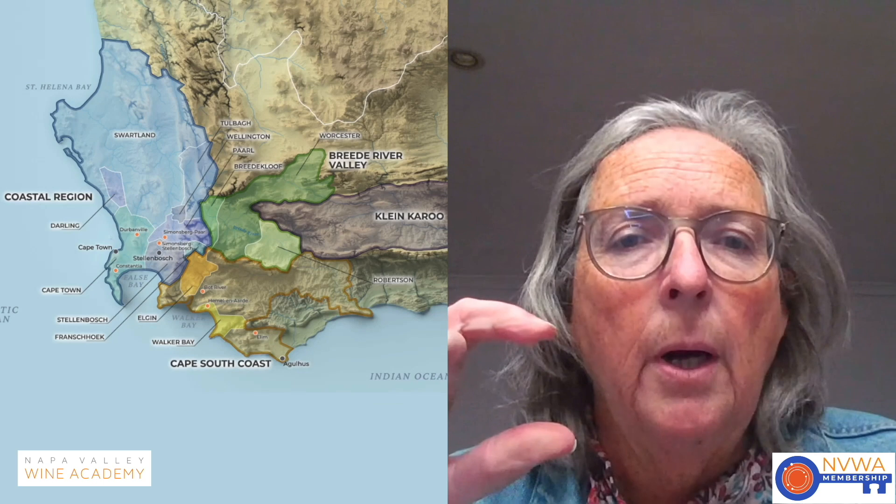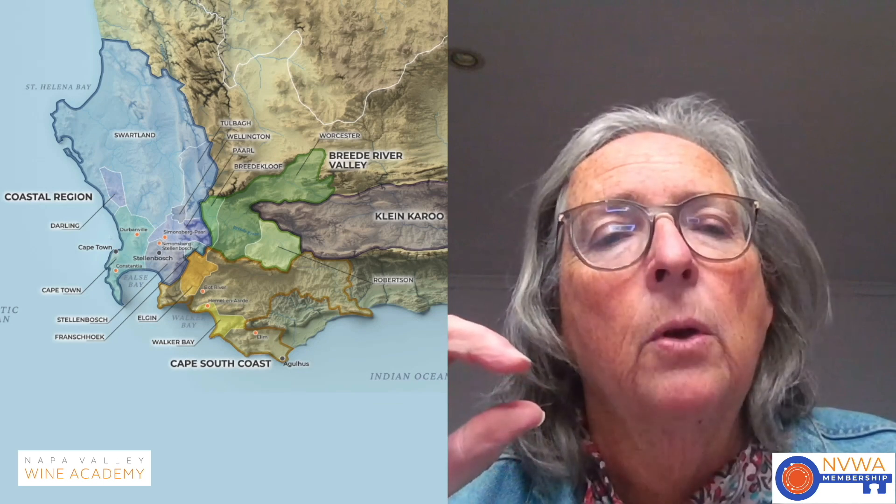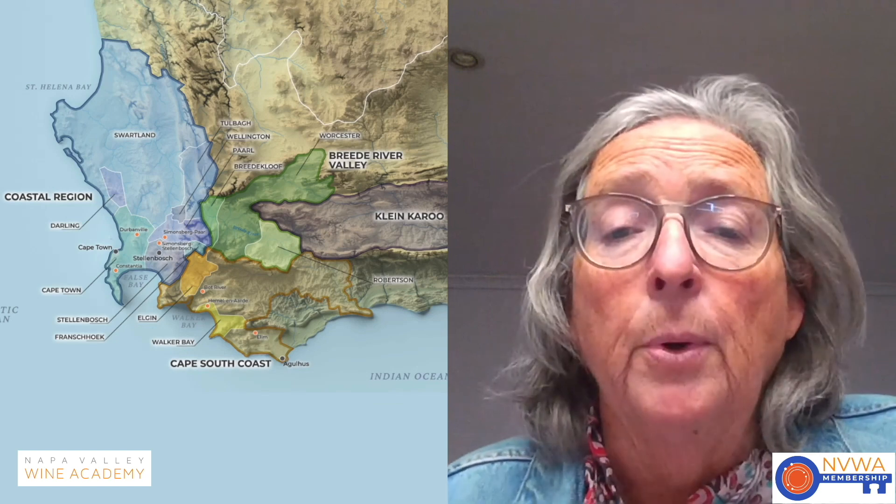So each one of those is then drilling down and becoming more and more specific. If you take Stellenbosch, for example, Stellenbosch is your district, but within the Stellenbosch district there are separate wards. Each of those are geographically distinct from the other. And the wards in this case would be Banghoek, Bottelary, Devon Valley, Jonkershoek Valley, Papegaaiberg, Polkadraai Hills, Simonsberg-Stellenbosch, and Vlottenburg.